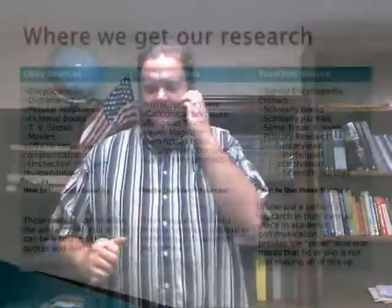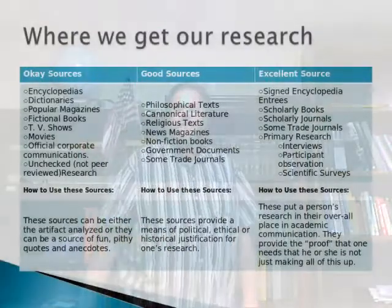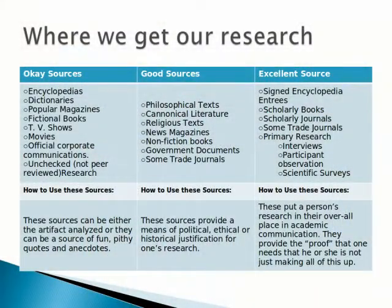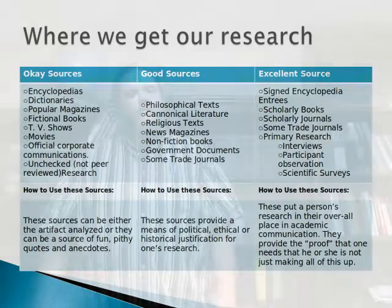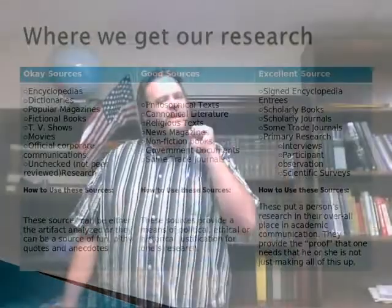Better than okay sources are what I call good sources. Good sources include things like philosophical texts. I quote Aristotle and Cicero on a regular basis in this class — these things are good sources. They can really help you understand something. If something has stood the test of time and for 2,000 years it's been true, that lends a lot of credence to it. Canonical literature is generally considered a good source.